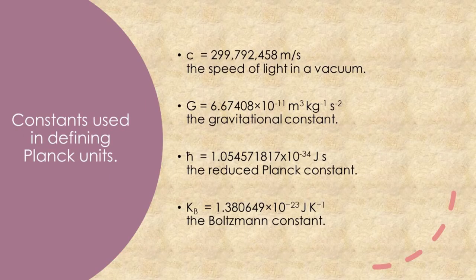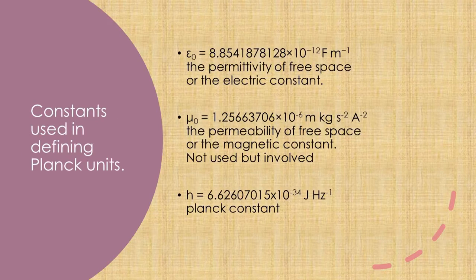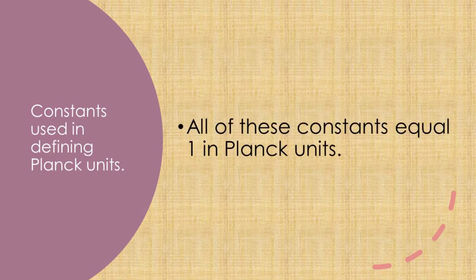There are several important constants used in defining Planck units: the speed of light in a vacuum, the gravitational constant, the reduced Planck constant, Boltzmann's constant, the permittivity of free space or the electric constant, and the permeability of free space or the magnetic constant. All of these constants equal one in Planck units — a pretty important fact about these units.